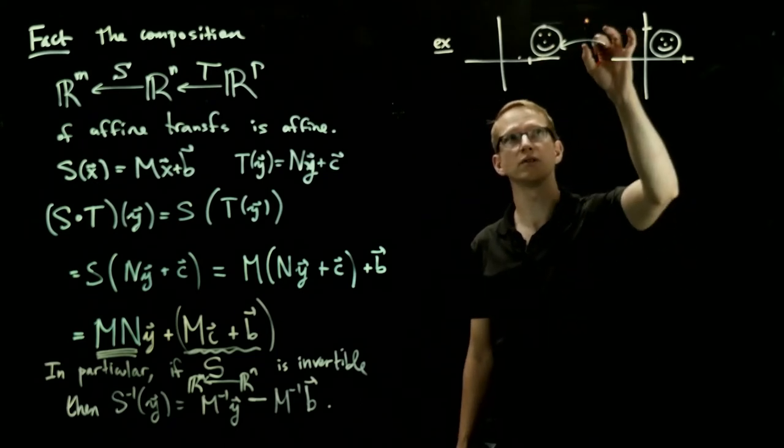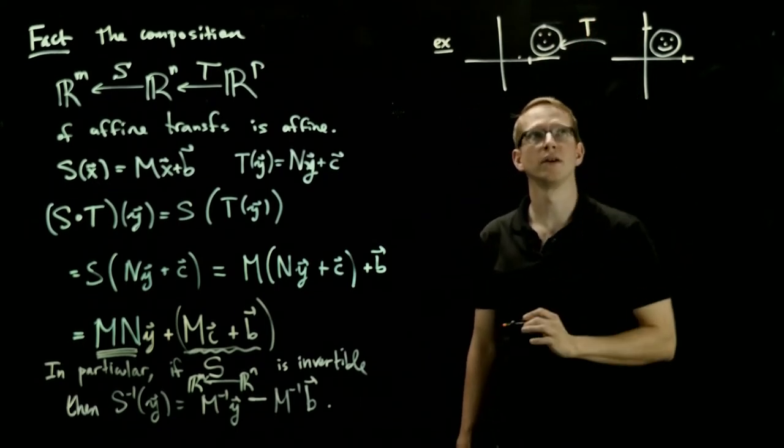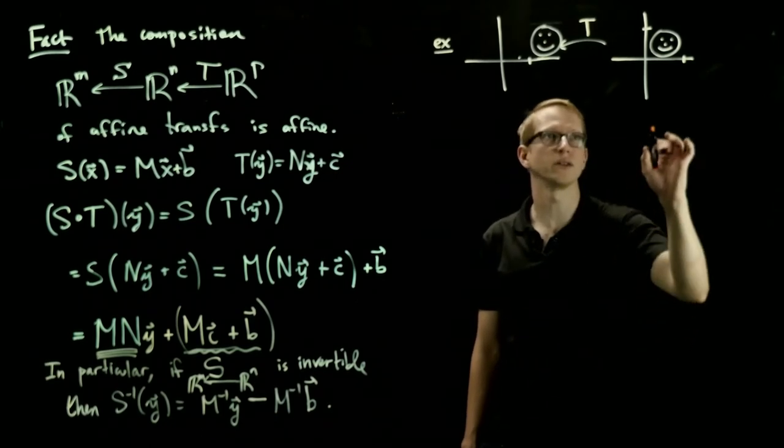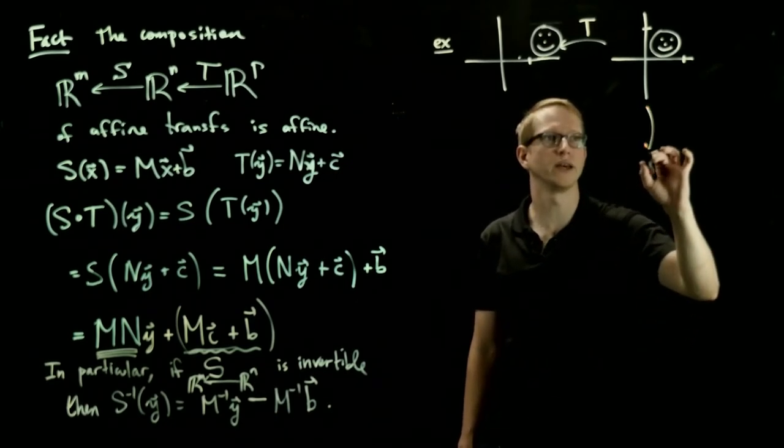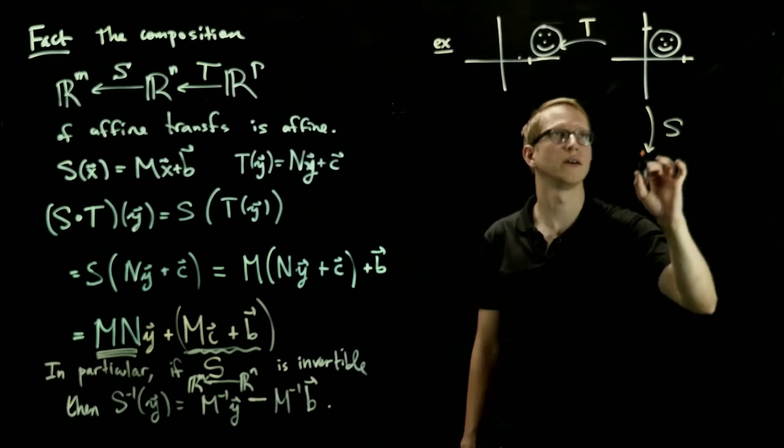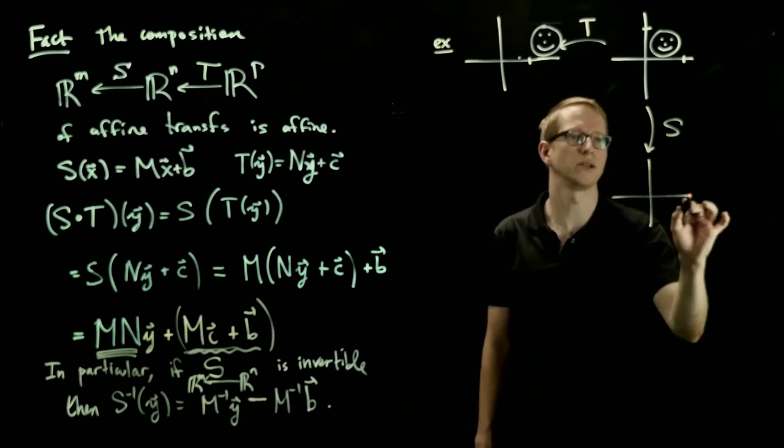And it gets translated along the x-axis in the positive direction. So let's call this transformation T. Another transformation that we can look at, let's call this one S, is rotation by 90 degrees.